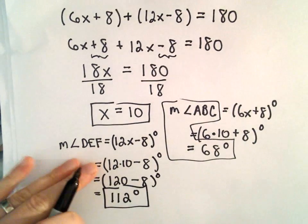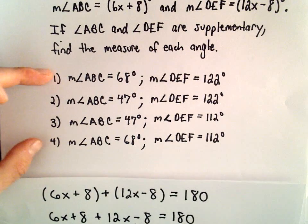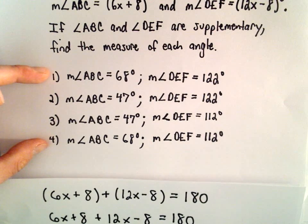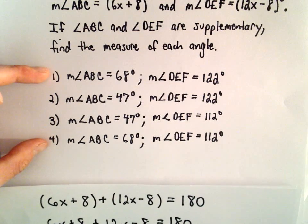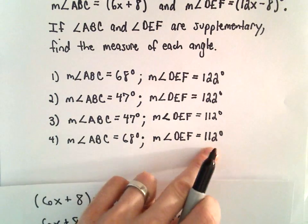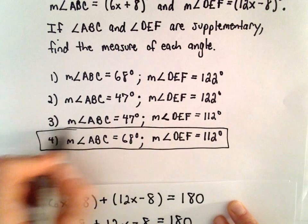Let's just go back to our answer choices there. So ABC was 68 degrees, so it's either going to be answer choice 1 or 4. Again, they have to add up to 180 total. And we found out that the measure of DEF was 112 degrees, so answer choice number 4 would be correct.